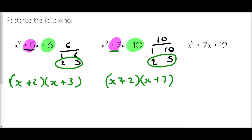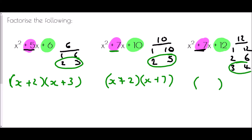Finally, for x squared plus seven x plus twelve, we're again looking for numbers that multiply to make the end and add to make the middle. Factors of twelve: one and twelve, two and six, three and four — that's the full list. Which pair adds to make plus seven? It's the last pair: three and four. So the factorized version has x in each bracket, plus three and plus four.